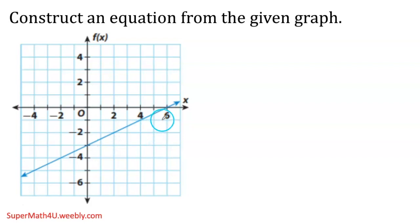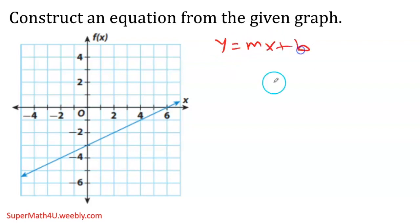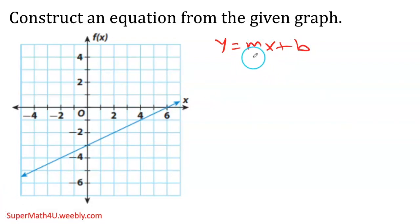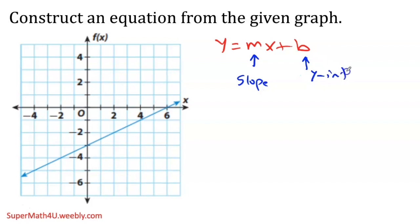By default, if they don't ask for a specific form, you use slope-intercept form: y equals mx plus b. When writing an equation, there are two things you need: the first is the slope and the second is the y-intercept. Everything else stays the same — y stays, x stays, m will be a number for the slope, and b will be a number for the y-intercept.